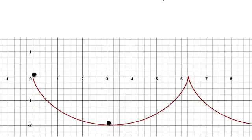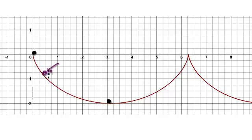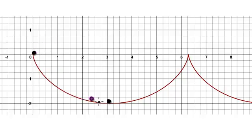Following on from the previous video, we had this frictionless cycloid and we were trying to show that no matter where you release the particle, the time it takes to hit the lowest point will always be the same. So even if you release it here, even though the distance is less, the time it takes to hit the lowest point will be the same as releasing it from the origin. Even if you release it closer, even though the distance is shorter, the time to hit the lowest point remains the same.